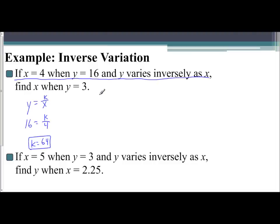Then what I'm going to do is use the second half, find x when y equals 3. I'm going to write y equals k over x. I now know my constant of variation is 64. We want to find x, so we don't know x, when y is 3. So to solve this, I'm going to cross multiply. 3 times x is 3x, 64 times 1 is 64, and so if I solve here, I would divide both sides by 3 and get 64 thirds. And that is my value for x.